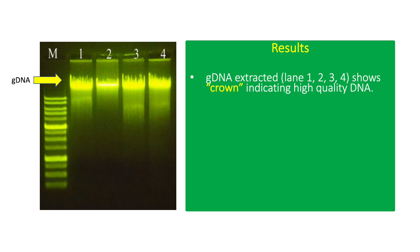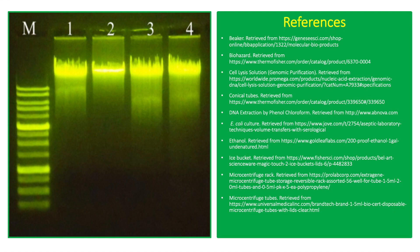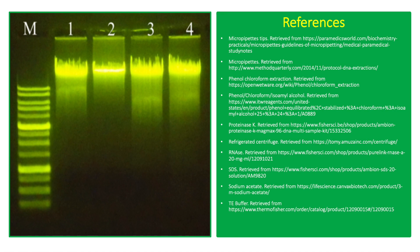This is an actual result showing genomic DNA extracted from bacterial culture using the phenol-chloroform method. The gDNA shows a crown-like appearance, indicating high quality DNA with minimal degradation. The gDNA band is commonly observed above the highest band in the DNA ladder, which is approximately 10,000 base pairs. Low quality gDNA shows smearing, indicating DNA degradation or phenol-chloroform contamination, which can significantly affect downstream applications such as PCR.